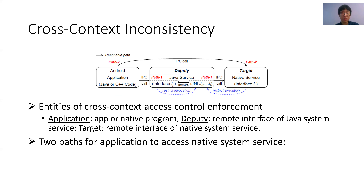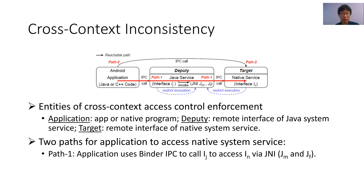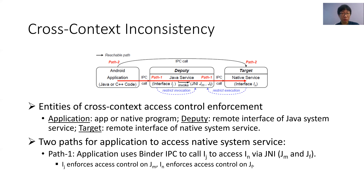The application has two pathways to access the functionality provided by native system service. For path 1, the application uses IPC to call the remote interface IJ of Java system service to access the remote interface IN of native system service. IJ is the deputy of target IN as it internally invokes the JNI method GM, whose corresponding JNI function GF uses IPC to call IN. IJ and IN both enforce access control on the calling process of IPC. Precisely, IJ enforces access control on GM to restrict it from being invoked by the application, and IN enforces access control on GF to restrict itself from being called by the Java system service.